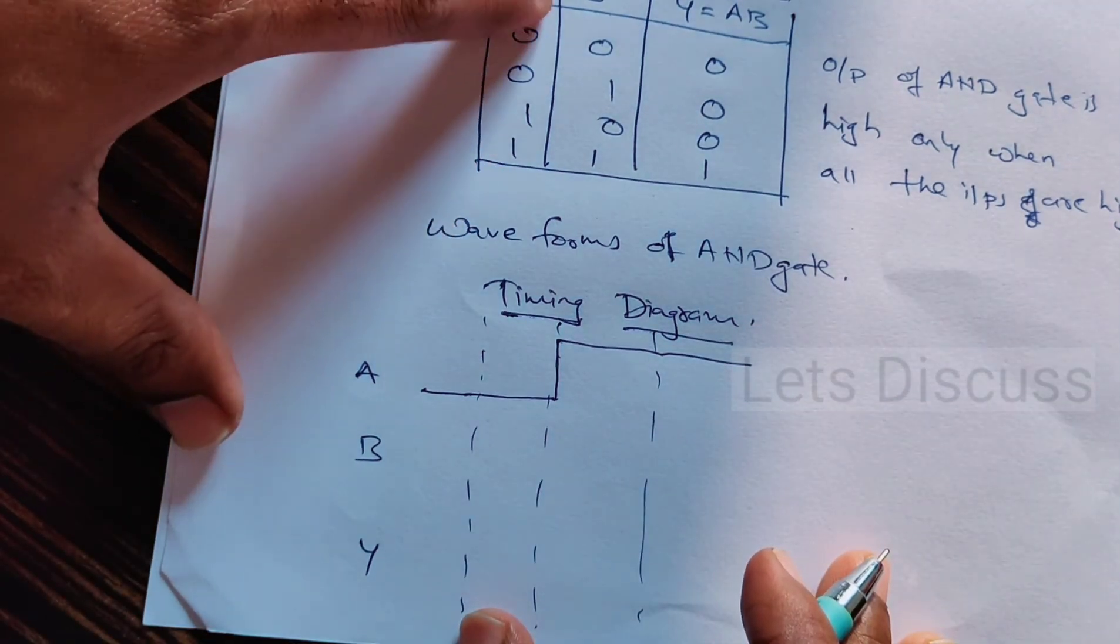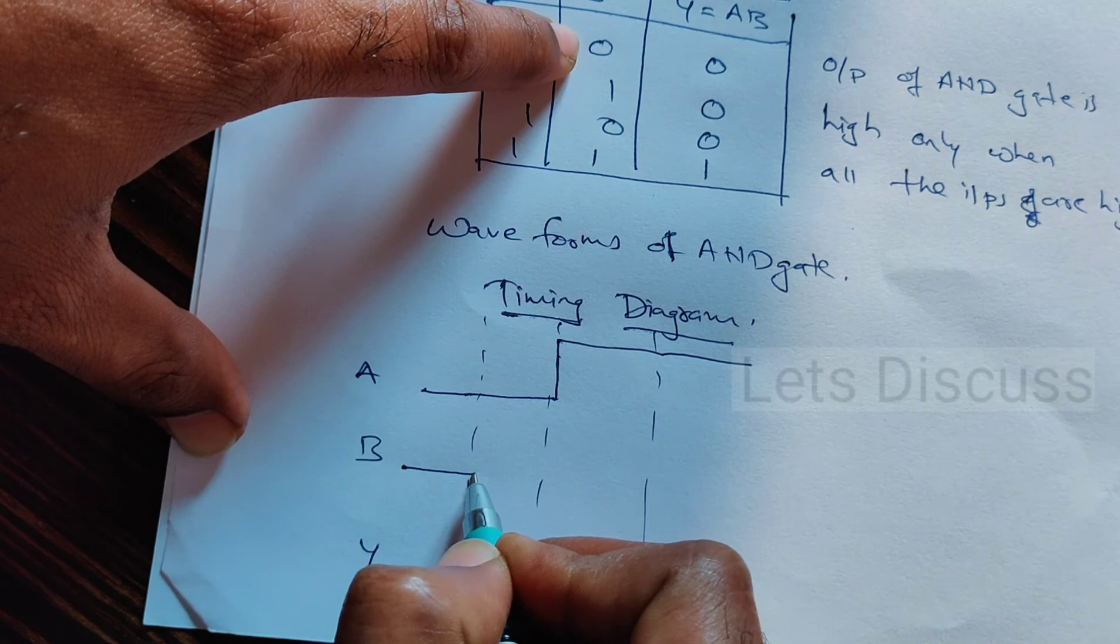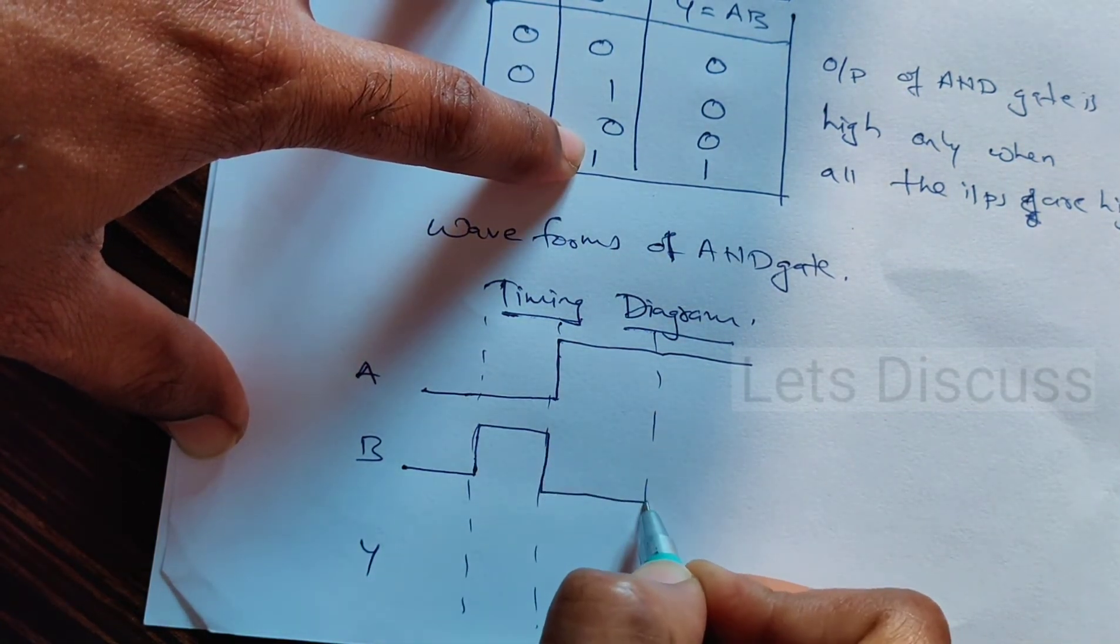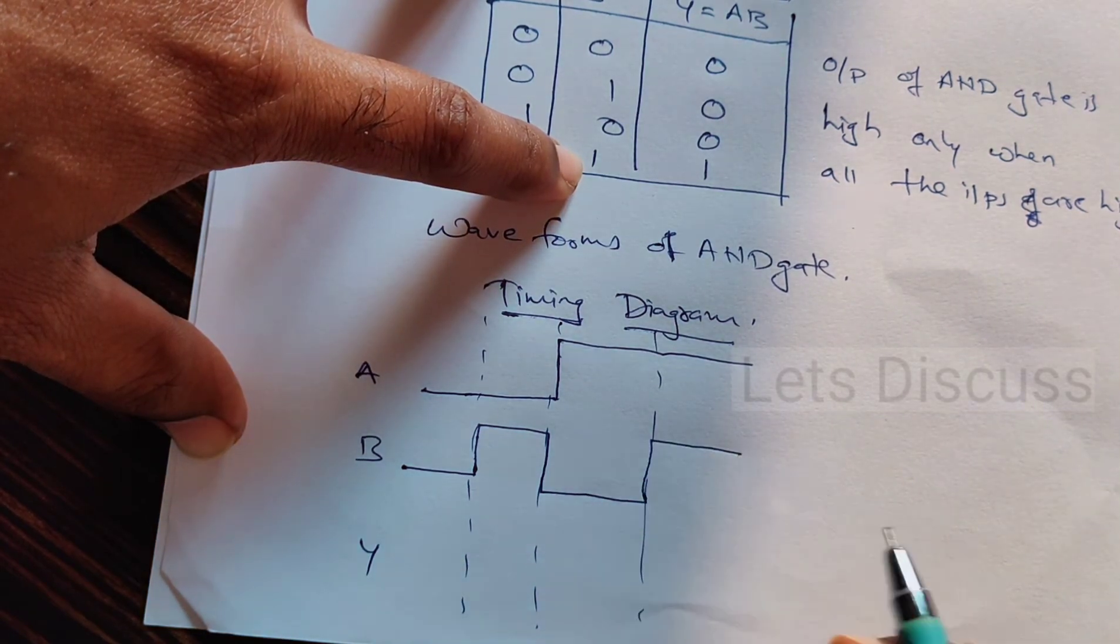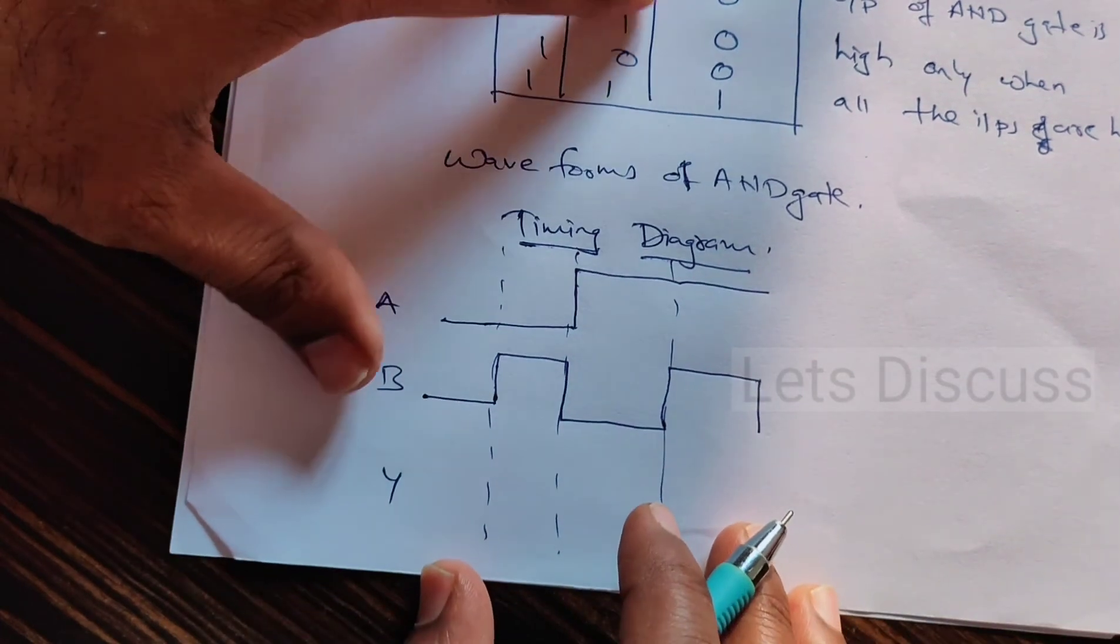Let us see input B. Initially B is low, then high, next low, again it's high.